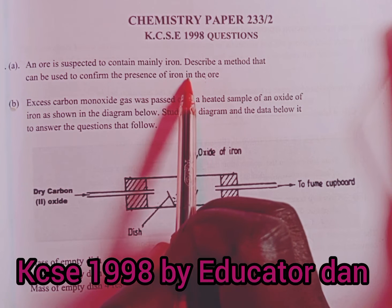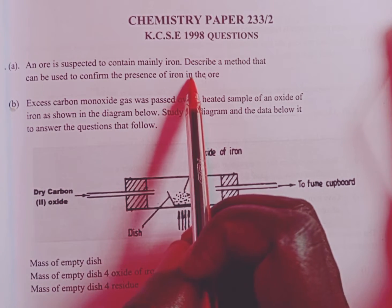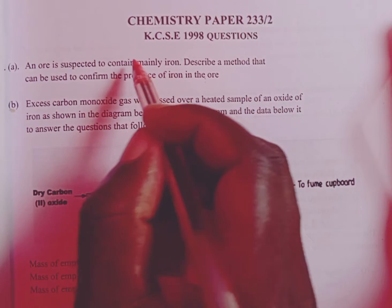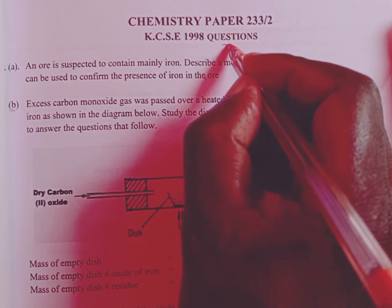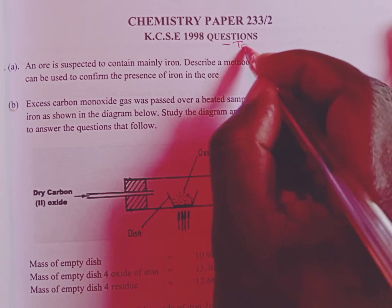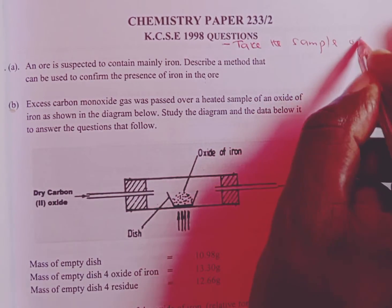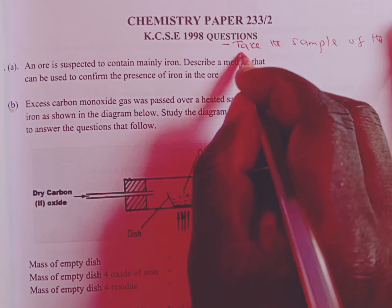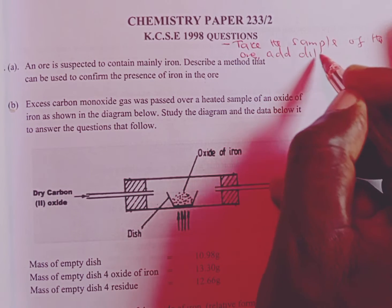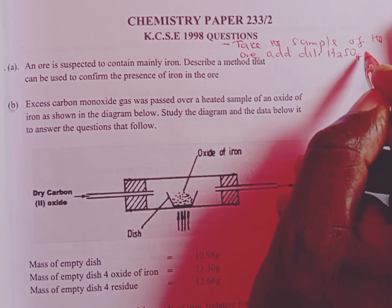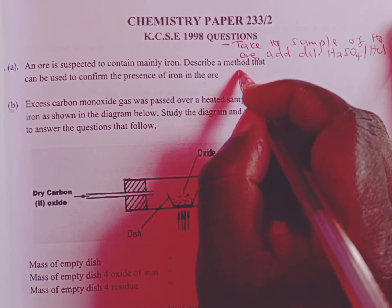The only way we are going to confirm the presence of iron in the ore is to carry out what we call a cation test. So as part of the answer to this question, we are going to first take the sample of the ore, then we add dilute either sulfuric acid or dilute hydrochloric acid.